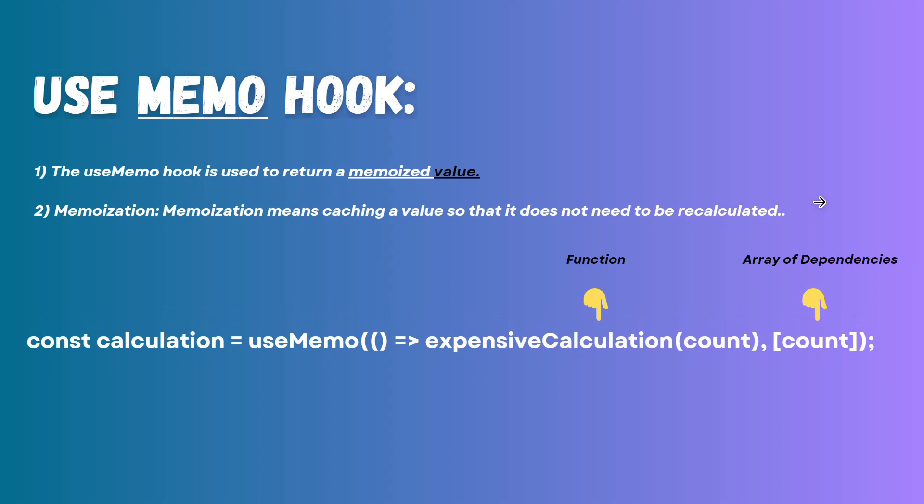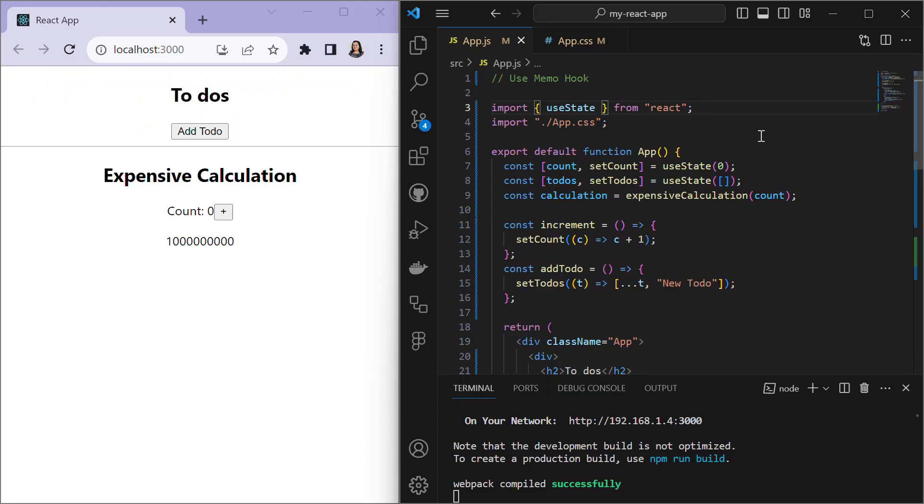In this example, expensiveCalculation is a function whose result will be memoized. It will be re-executed if one of its dependencies changes. In this case we have one dependency — count — but there can be many dependencies like count1, count2, or count3. If the values in the dependency array remain the same, the memoized value will return without re-executing the function.